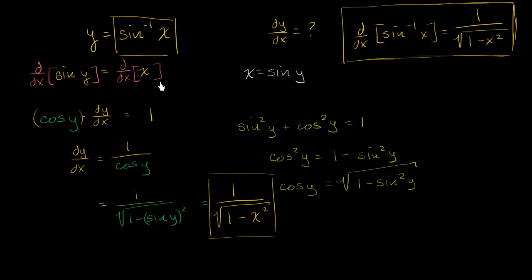In the last video, we proved to ourselves that the derivative of the inverse sine of x is equal to 1 over the square root of 1 minus x squared.